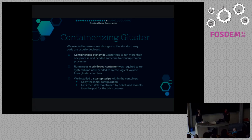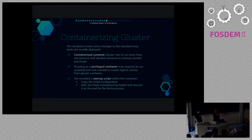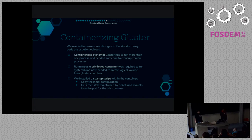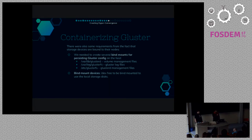We don't need privileges for systemd to run in a container anymore because of the OCI systemd hooks. But we do need a privileged container for accessing the devices and to create the LVs from the container — we create logical volumes from the Gluster container for Gluster to use. The startup script is an initial script which does all the things that an RPM installation does before running Gluster. In case of upgrade, this script will take care of versioning for Gluster, as RPM installation or upgrade would do.